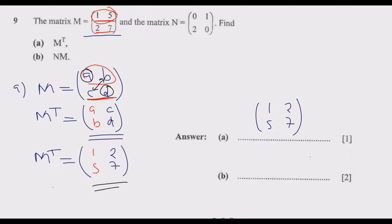For part B, we need to find the multiplication. To multiply two matrices, the order is very important. So N is (0, 2; 1, 0) and we are multiplying with (1, 5; 2, 7), like this.